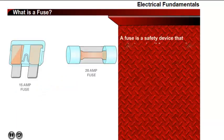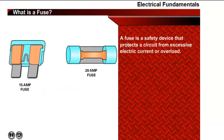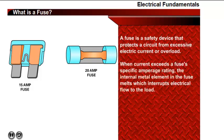A fuse is a safety device that protects a circuit from excessive electric current or overload. When current exceeds a fuse's specific amperage rating, the internal metal element in the fuse melts, which opens the circuit and interrupts the flow of electricity to the load.